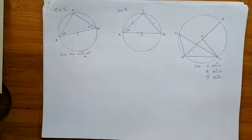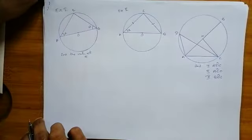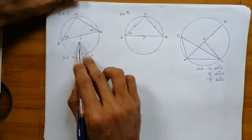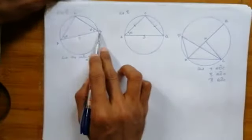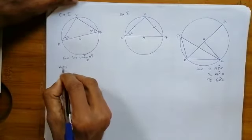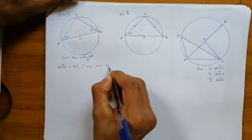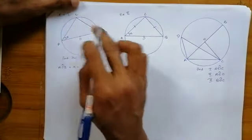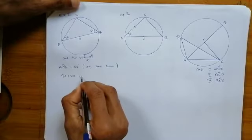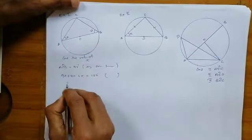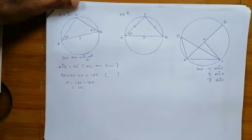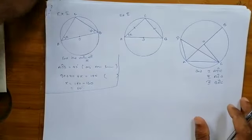We have three example questions. For the first question: copy the figure and find the value of X. O is the center, so AB is the diameter. Therefore angle ACB is on the semi-circle, so ACB equals 90 degrees. We have two angles of the triangle, so: 90 plus 70 plus X equals 180. Therefore X equals 180 minus 160, so X equals 20 degrees.